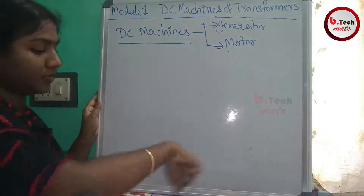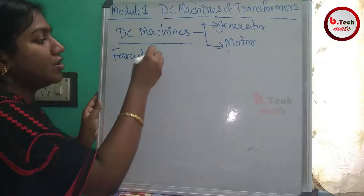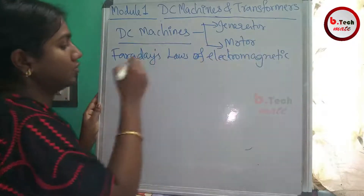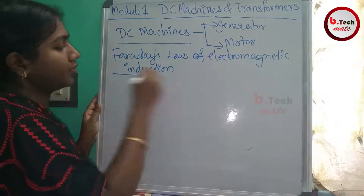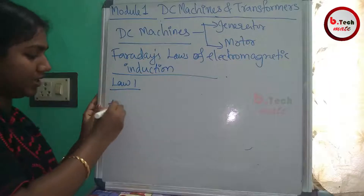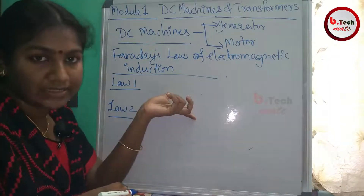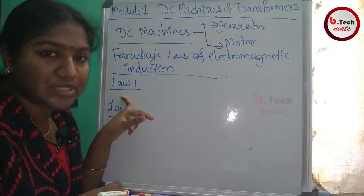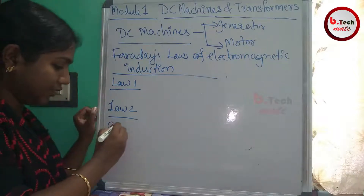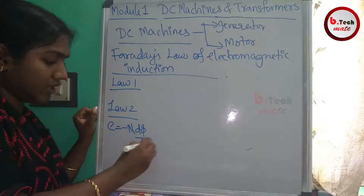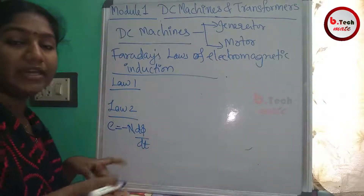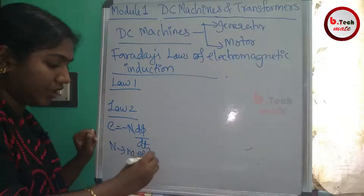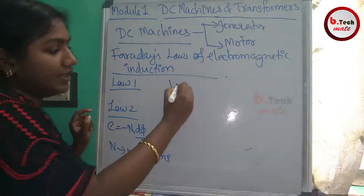Faraday's Laws of Electromagnetic Induction consist of two laws. The first law states: whenever a conductor cuts the magnetic flux, an EMF is induced in that conductor. The second law states: the magnitude of induced EMF is equal to the rate of change of flux linkage — E = −N × dΦ/dt, where N is the number of turns of the coil and dΦ/dt is the rate of change of flux linkage.